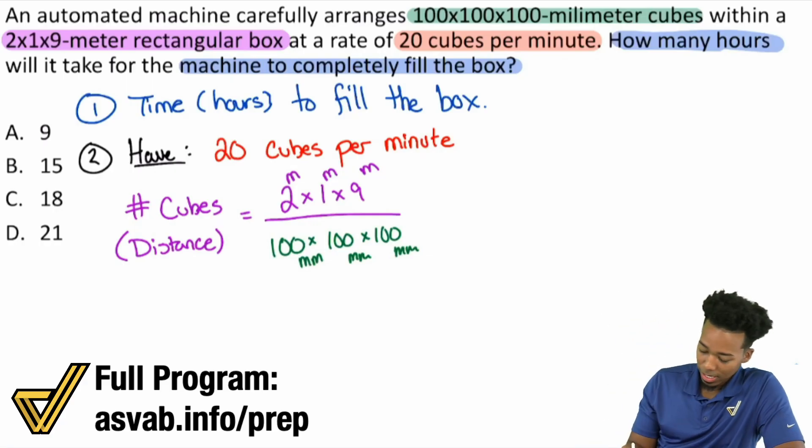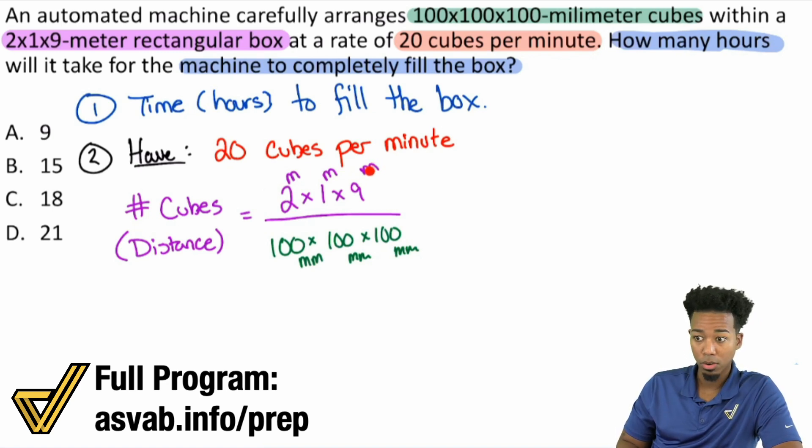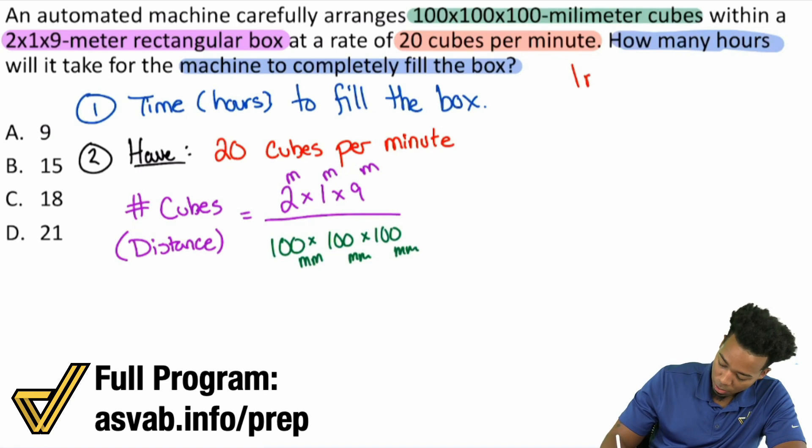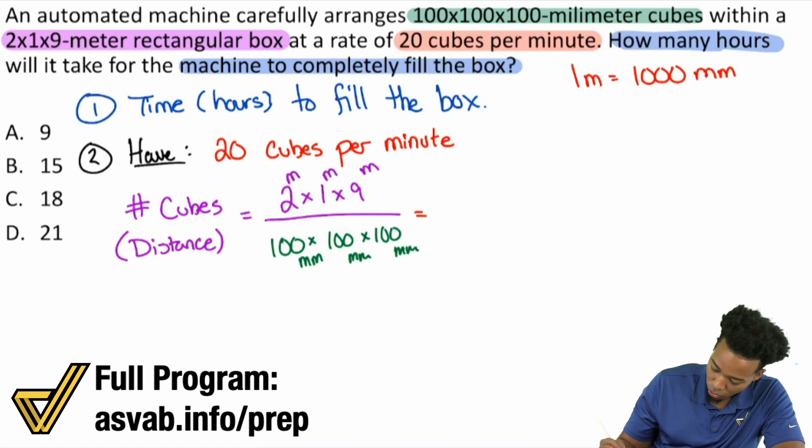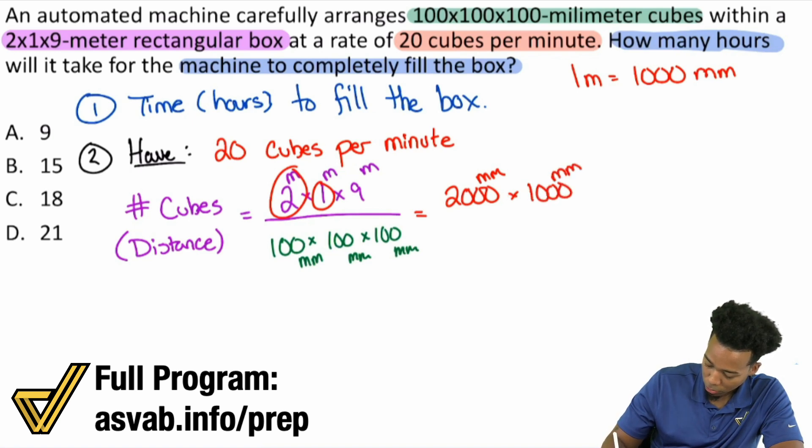First things first, I want to turn either the meters into millimeters, which is very easy to do, or turn the millimeters into meters, dealing with decimals. So if you remember, one meter equals 1,000 millimeters. That's the prefix milli meaning a thousand. So what we can change this into is 2 meters is 2,000 millimeters times 1,000 millimeters times 9 meters, which is 9,000 millimeters.